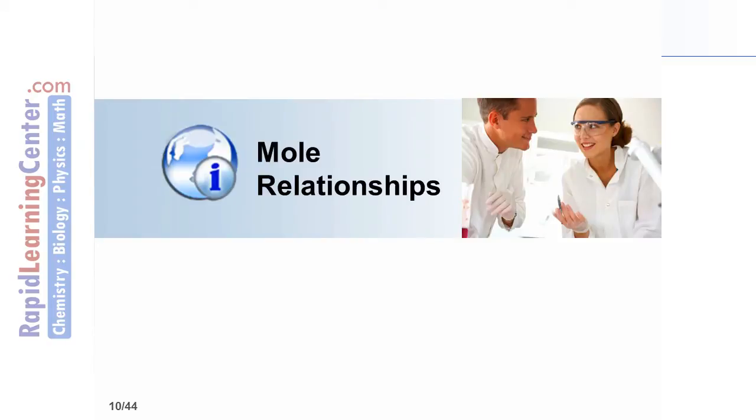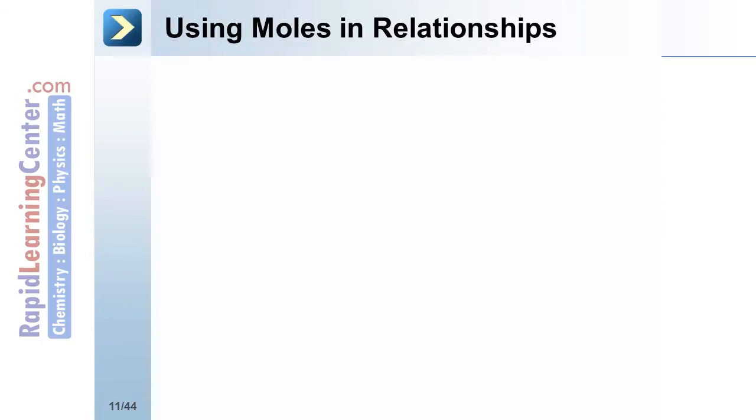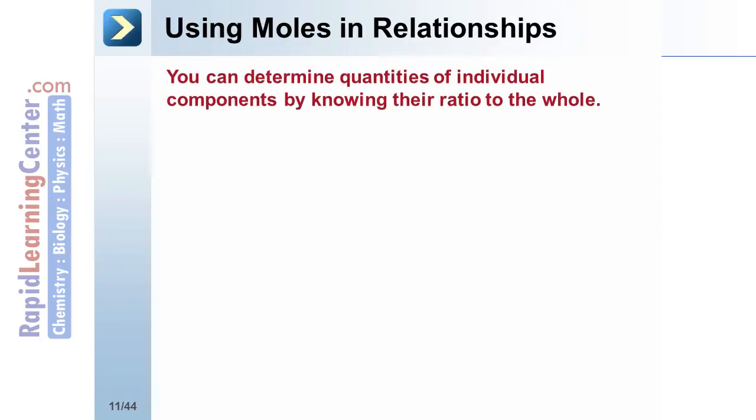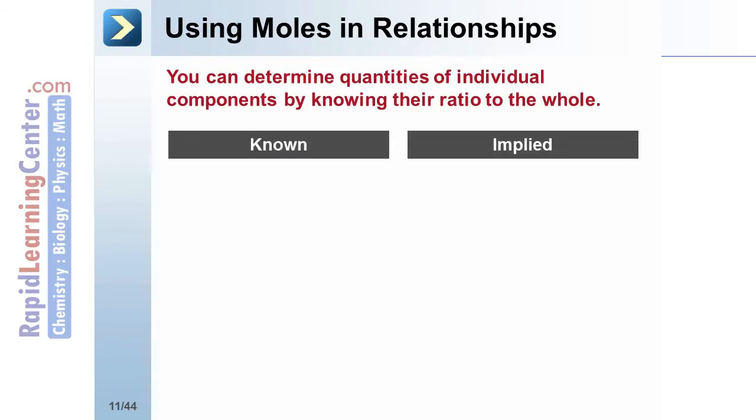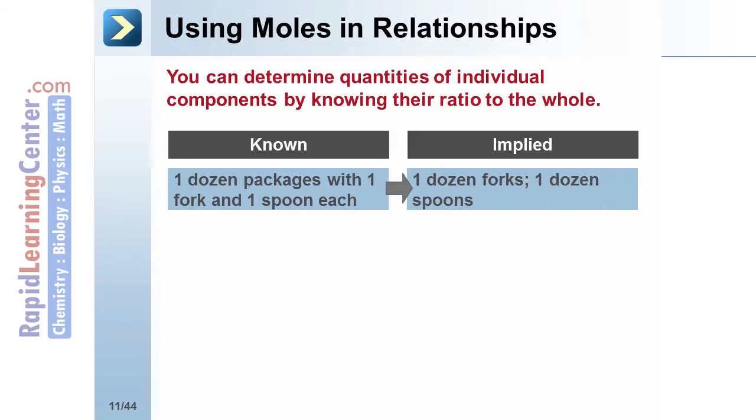How is the mole used when determining relationships between things? If you know how many of the overall group that you have, and you know how many individual components are in each group, you can infer the number of implied components. For example, if you have one dozen packages with one fork and one spoon, then you know you have one dozen forks and one dozen spoons.